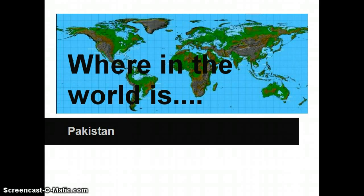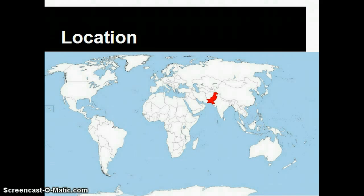Where in the world is Pakistan? Pakistan is located in South Asia, highlighted in red on this map, right next to India and Afghanistan. It borders the Indian Ocean.